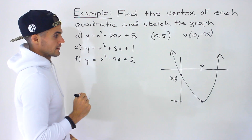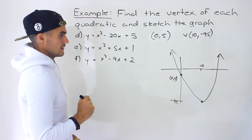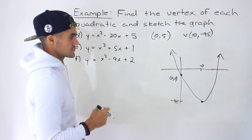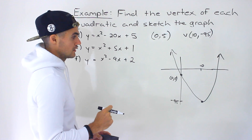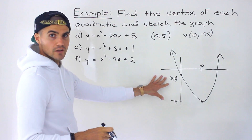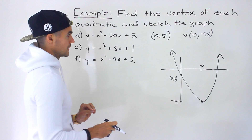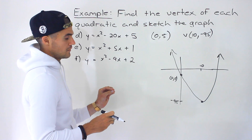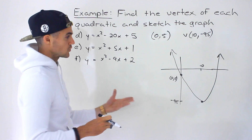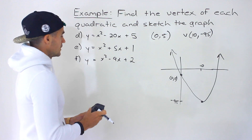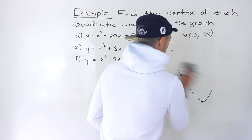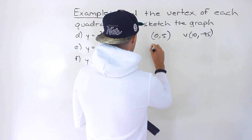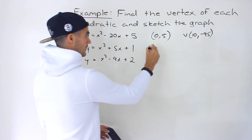Sketching part d: vertex at (10, −95) is way down here, and y-intercept at (0, 5). These aren't the best sketches — for a more precise graph you'd want to use graph paper. This video is more about practicing the completing the square process.